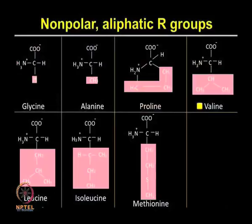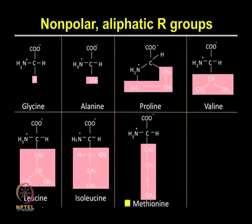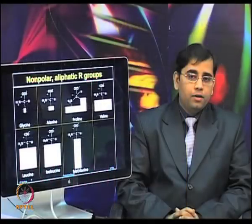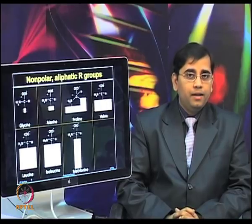Valine is a branched-chain amino acid. Leucine, shown in the left-hand side bottom panel, is a hydrophobic amino acid with an isobutyl R group. Isoleucine also has hydrophobic characteristics and contains a chiral side chain — it is one of the essential amino acids. The last in this group is methionine, which includes a thioether group. There are only two amino acids which contain sulfur, and they play a very critical role.